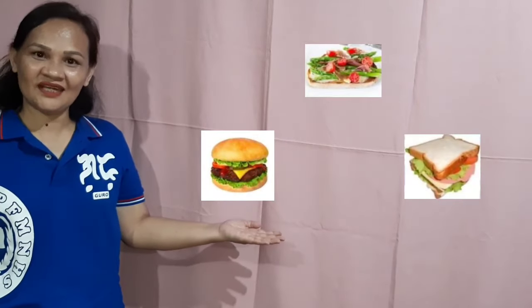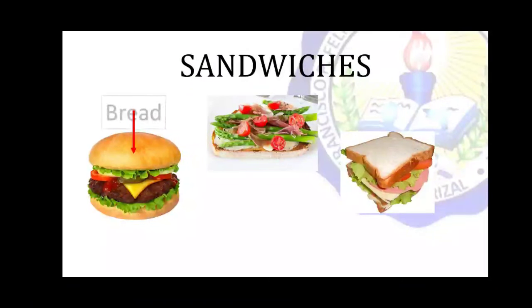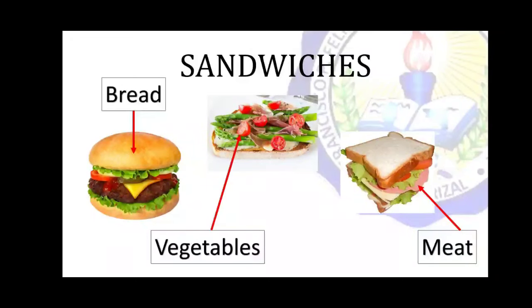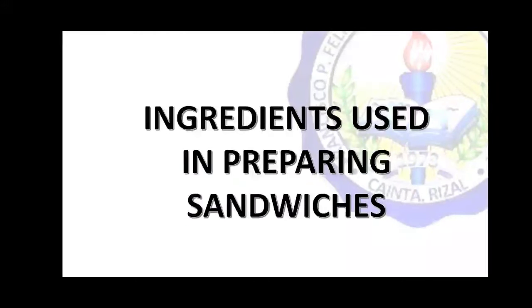The given words in the word search puzzle have something to do with this — what can you see in the pictures? Yes, they are sandwiches. What do you call this part of a sandwich? Yes, you are correct — it is bread. How about this part? Very good, it is meat. And this? Wow, you are correct — vegetables! The bread, vegetables, and meat are some of the many ingredients used in preparing sandwiches, which is our main topic for today.